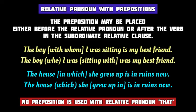Sometimes the relative pronoun is used with a preposition, and the preposition may be placed either before the relative pronoun or after the verb in the relative clause. For example, 'The boy with whom I was sitting is my best friend' — here the preposition 'with' comes before 'whom.' But this may also be written as 'The boy who I was sitting with is my best friend,' where 'with' comes after the verb 'sitting.' Similarly, 'The house in which she grew up is in ruins' can also be 'The house which she grew up in is in ruins.'